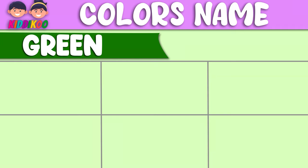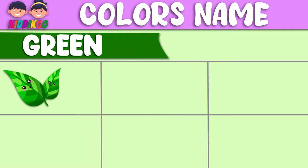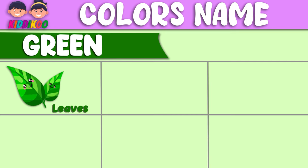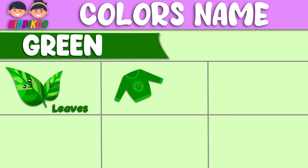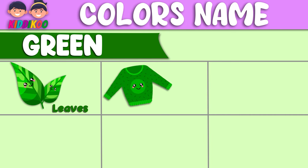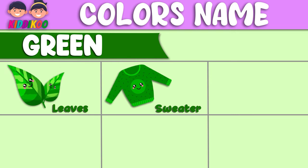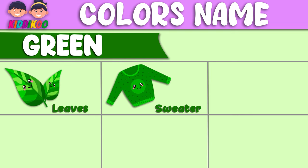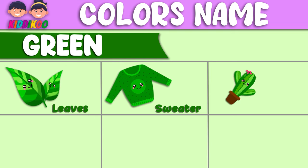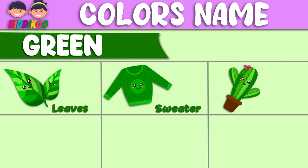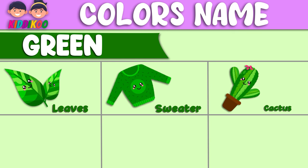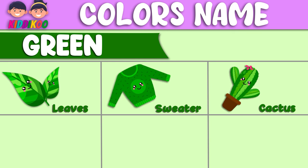This color is green. Leaves — these leaves are green. Sweater — this sweater is green. Cactus — this cactus is green.